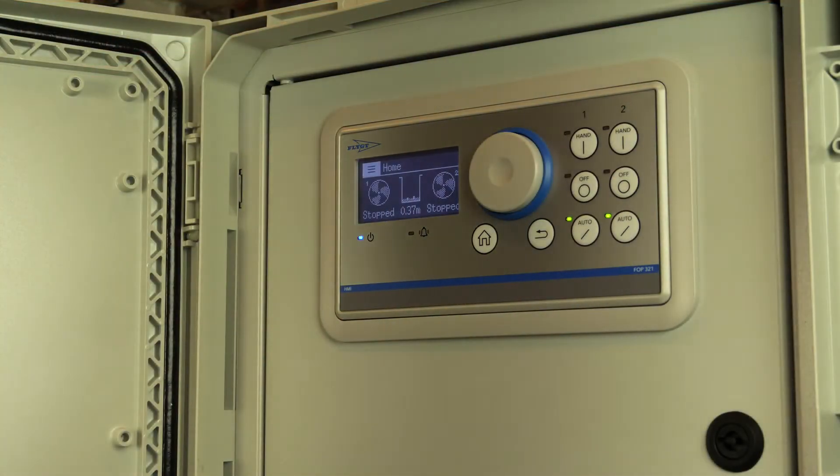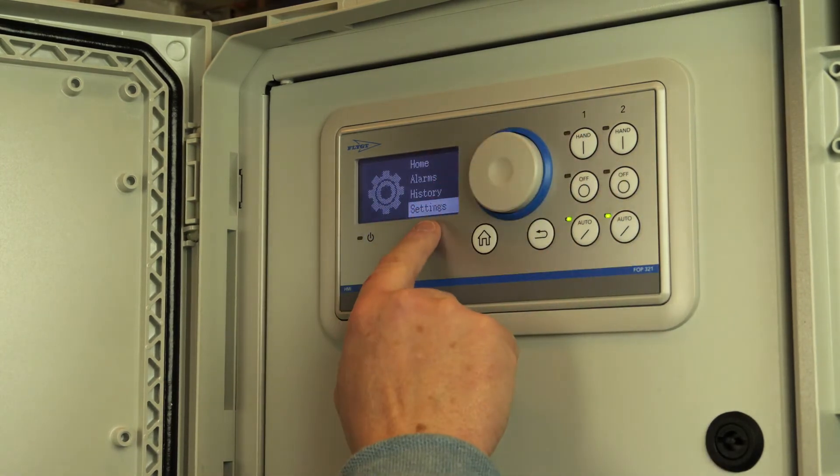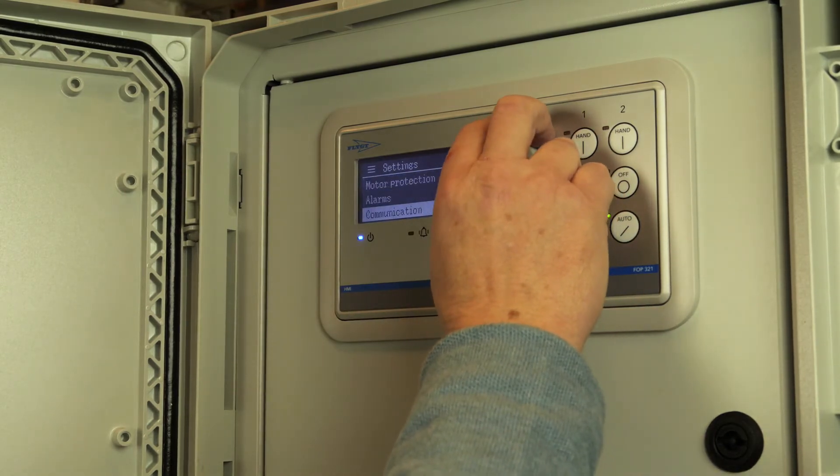And then we have the settings for the FGC 400. So let's go to the home menu, click on that, and then step down to settings.